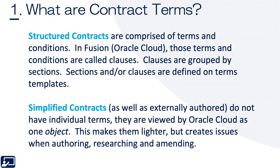Sections and/or clauses are defined on terms templates. Think of the templates as something similar to pulling a Word template from a shared drive. Simplified contracts, as well as externally authored — remember supplier paper I talked about in the contracts overview — do not have individual terms. They are viewed by Oracle Cloud as one object. This makes them lighter but creates issues when authoring, researching, and amending.